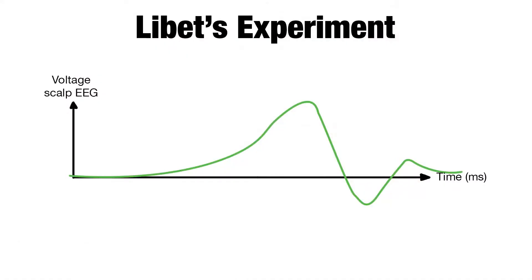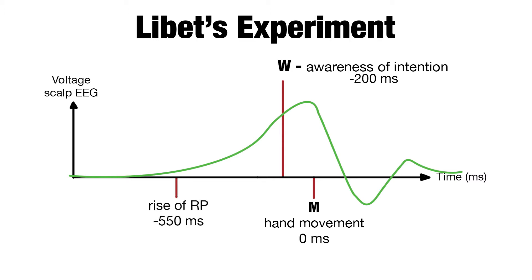Here's a simple drawing that sums up the basic results. Let's call the time of the hand movement Time M. It's the point in time relative to which Libet did his event-related averaging. W is the average time at which people reported feeling an urge or intent to move. As you can see, the beginning of the readiness potential precedes Time W by several hundred milliseconds. Because it precedes the conscious experience of wanting or intending to move, it's presumed to reflect unconscious processing that precedes becoming conscious of wanting or intending to move.